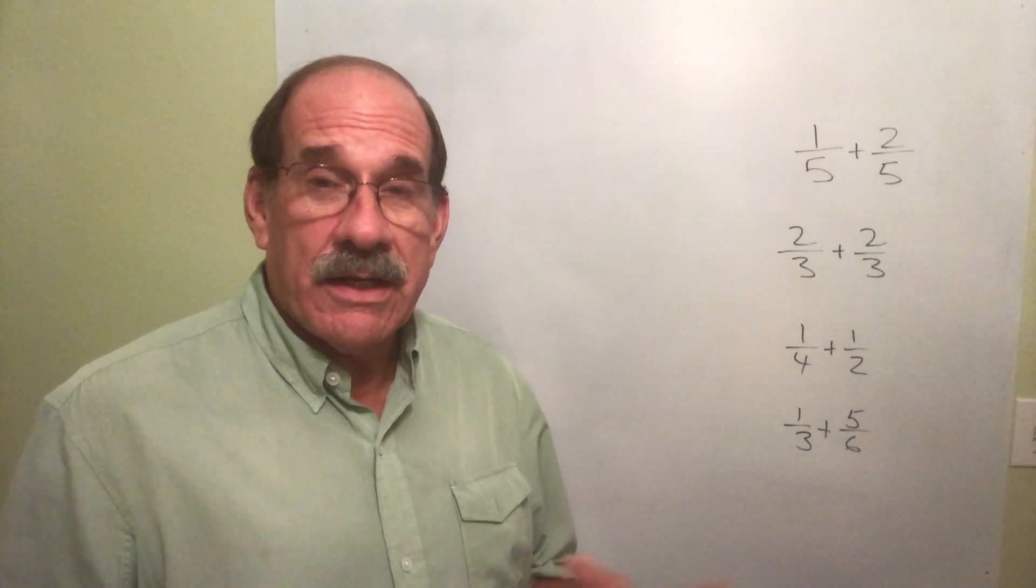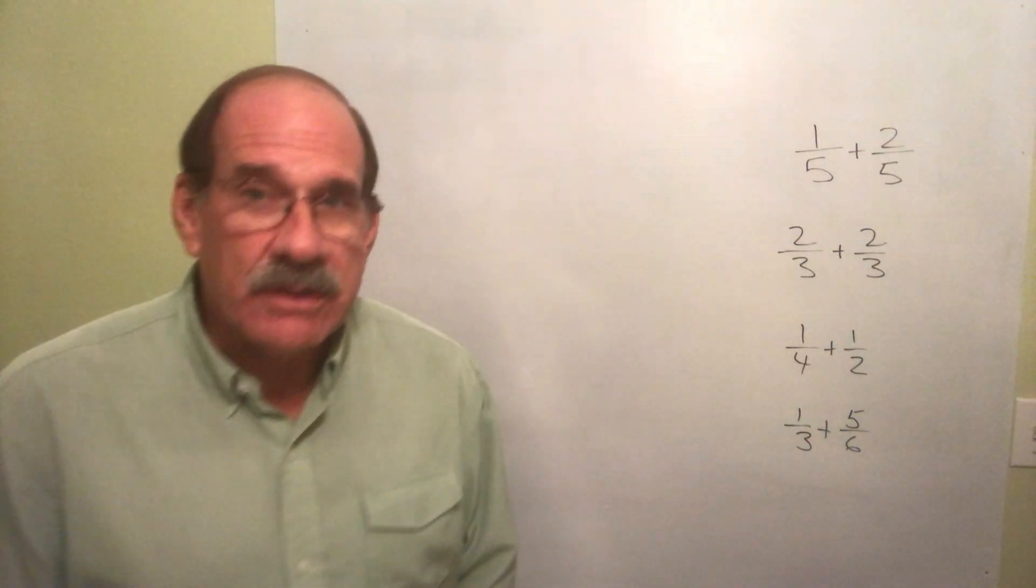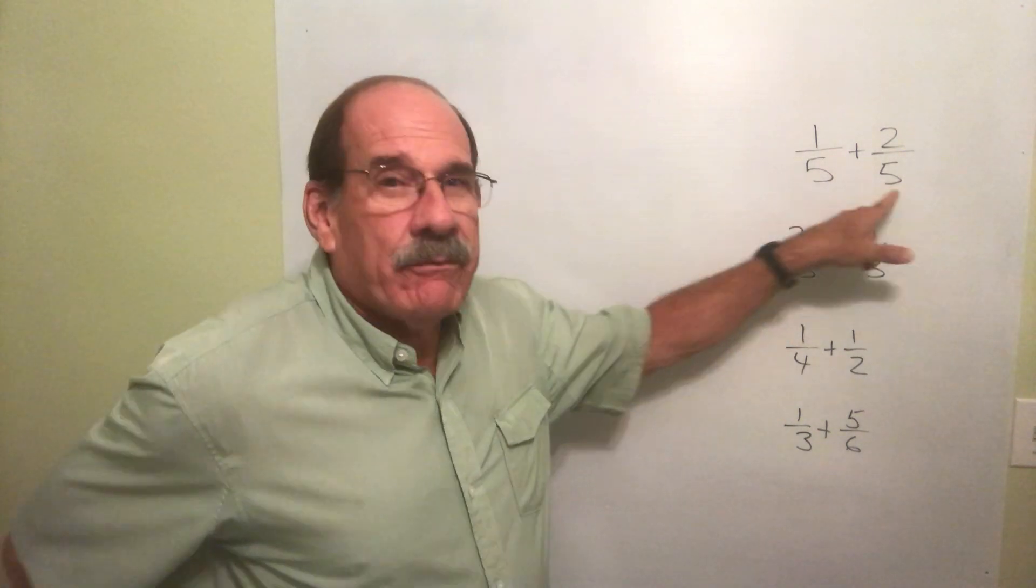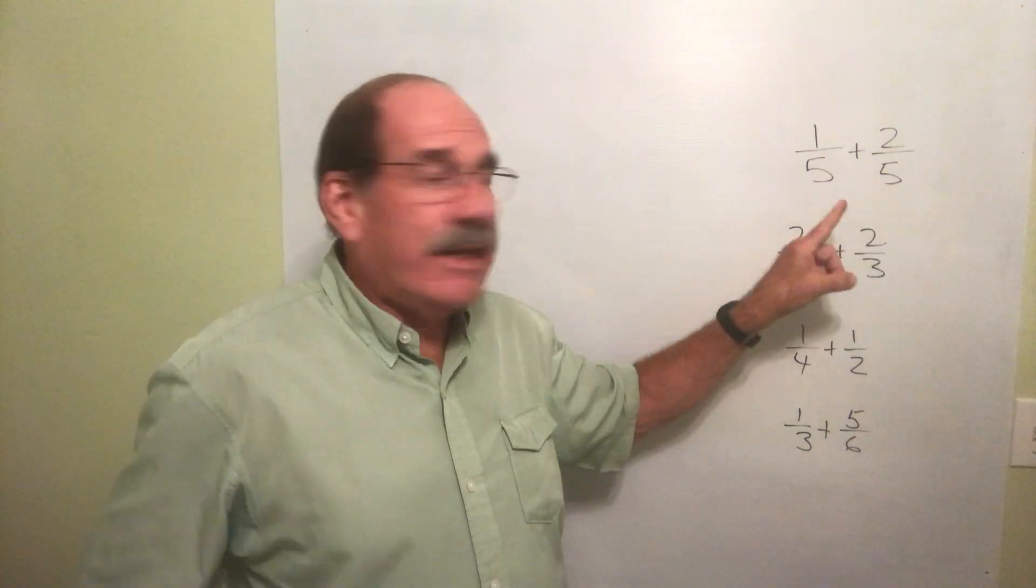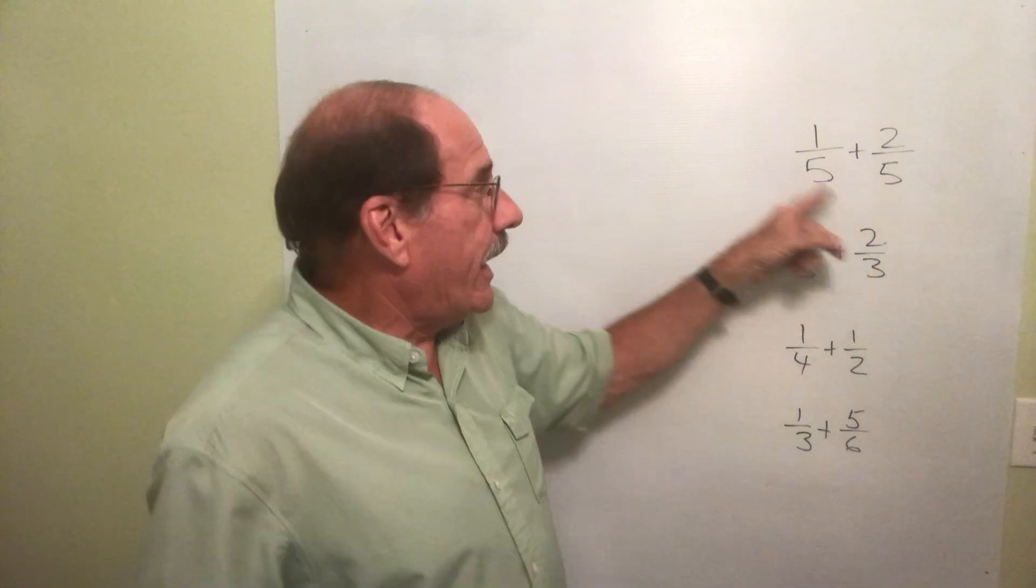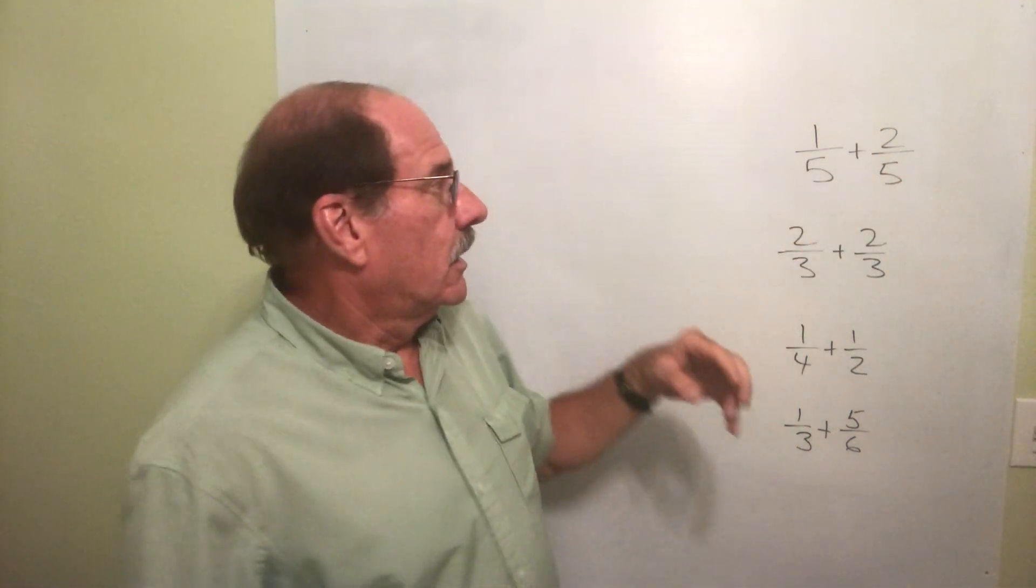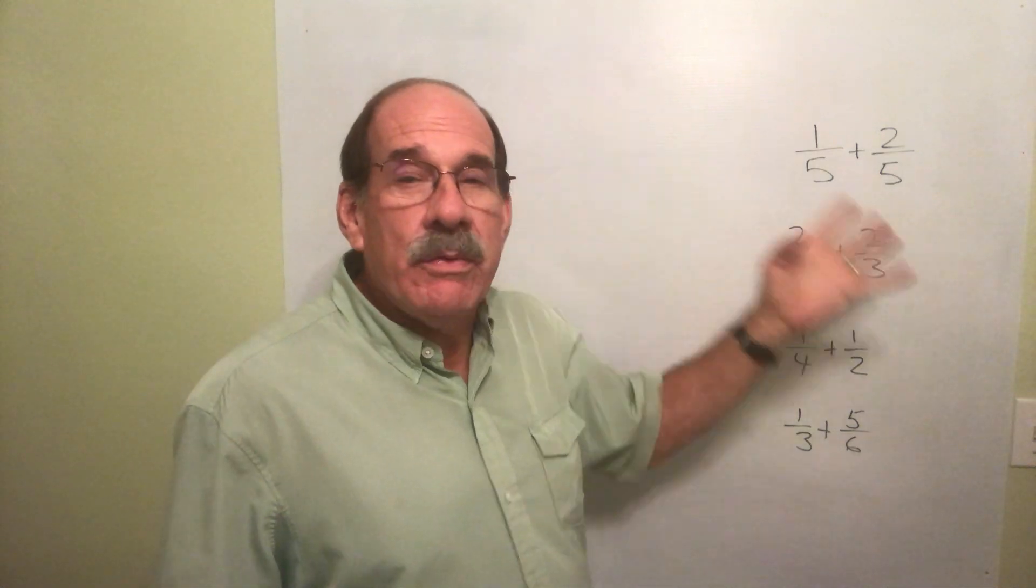We now go into the exciting topic of adding fractions. Let's start simple. To add fractions, you have to have the same denominator. Well, we do. We're adding one-fifth plus two-fifths. That's like saying one apple plus two apples. Well, that's three apples, right?